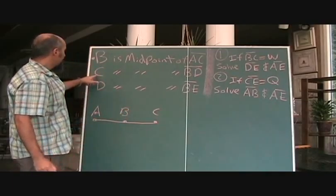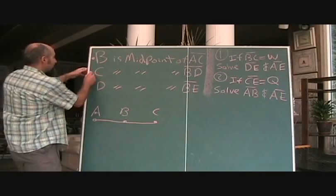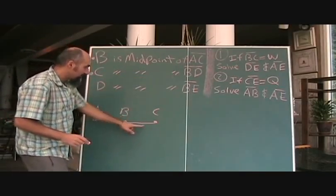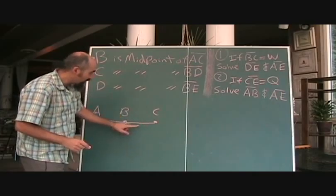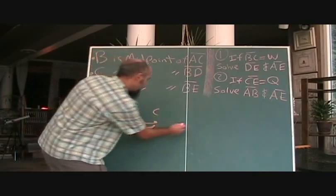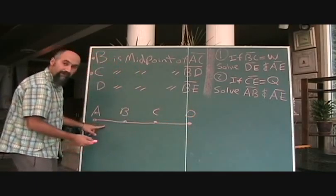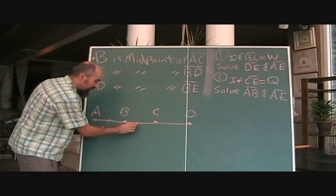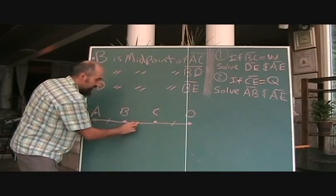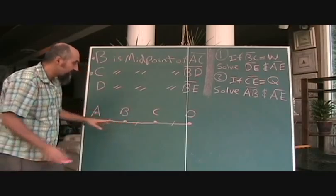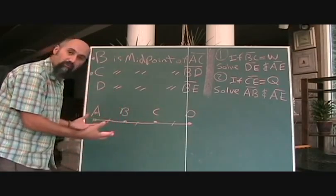Let's go to the next sentence. C is the midpoint of BD. Now we don't have a D, but if C is the midpoint of B and D, then D has to be somewhere. So what we know right now is this guy is equal to this guy, and this guy is equal to this guy. That means it's also equal to this guy. So right away we're starting to get a picture of what this question is going to look like.